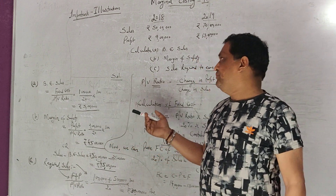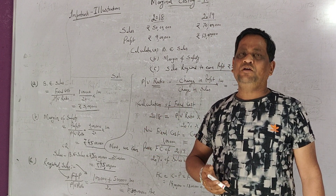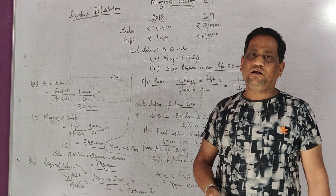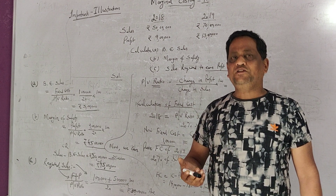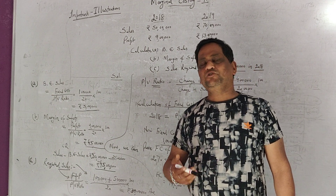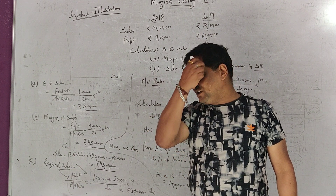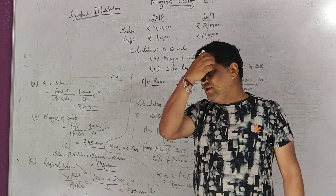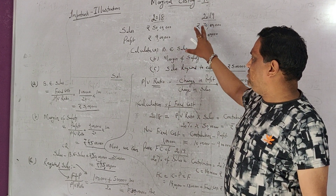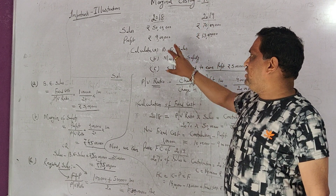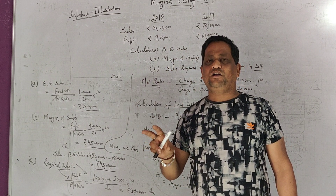As discussed in the last video, we covered profit volume ratio, break-even sale, required sale, and margin of safety. Now I have prepared an illustration to show how we calculate these, including how to find fixed expenditure when it is not directly given.